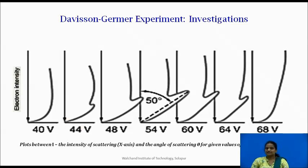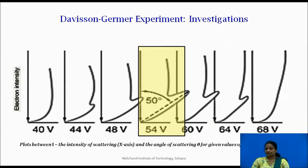The hump grew in size with increasing voltage in the graph develops a peak at 50 degree and the peak becomes more pronounced for a voltage 54 volt. It is observed that the electrons scattered more than 50 degree with the direction of the incident beam.